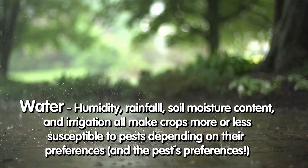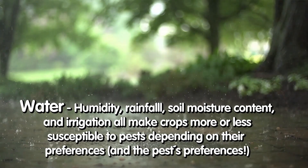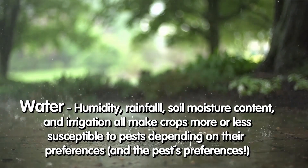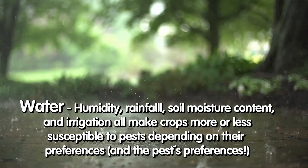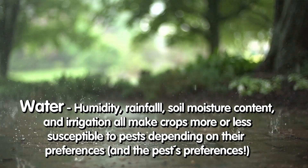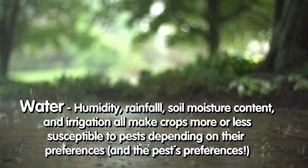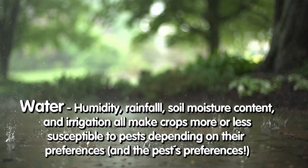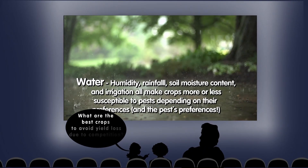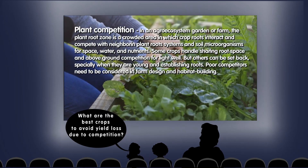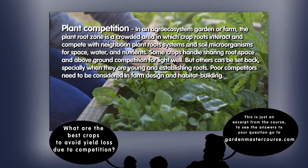When I say water I mean not just rainfall — I mean humidity, soil moisture content, and what irrigation we are able to do. It all makes crops more or less susceptible to pests depending on their preferences. We're going to talk more about that when we discuss diseases on Thursday and growing fruit and vegetables Friday morning. It's another detail we want to focus on.